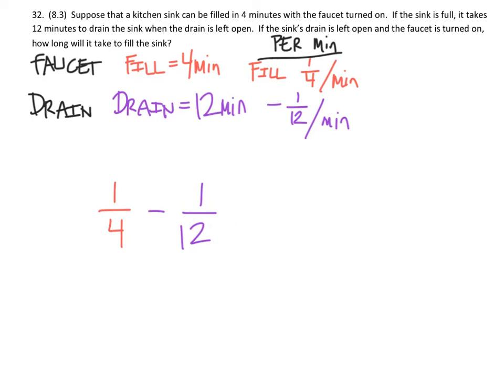Now the problem is we don't know how long it will take to fill up the sink, so we're going to need to multiply this amount by a certain number of minutes x, and that would give us a full sink, one like this. So one represents a full sink, one-fourth represents how much is put into the sink for every minute.